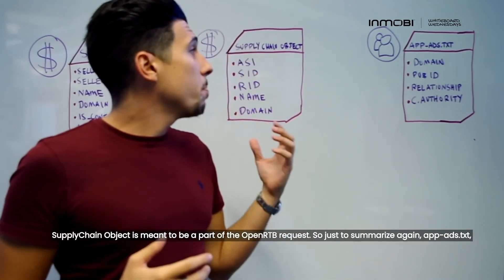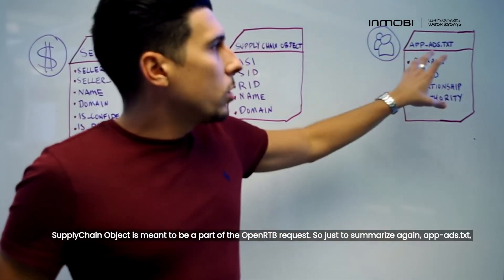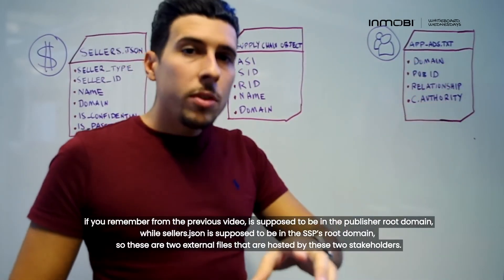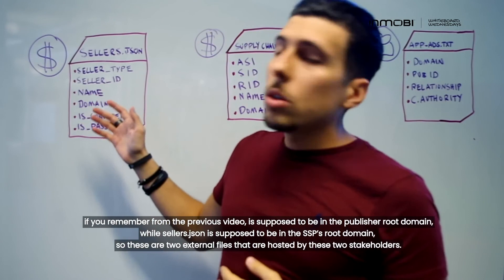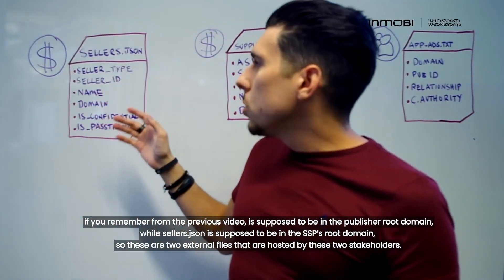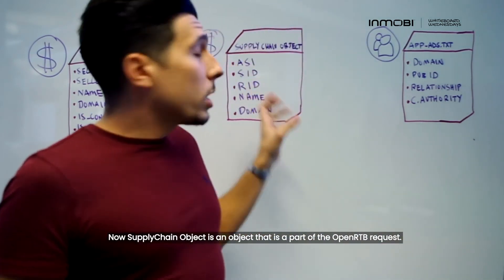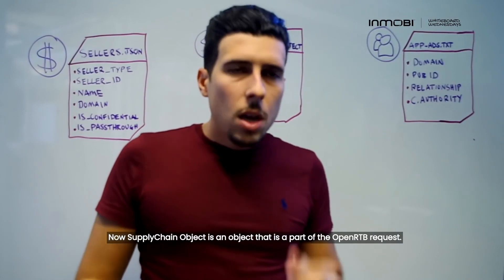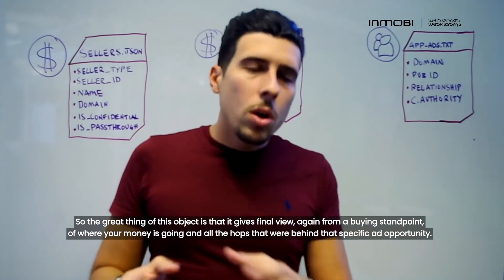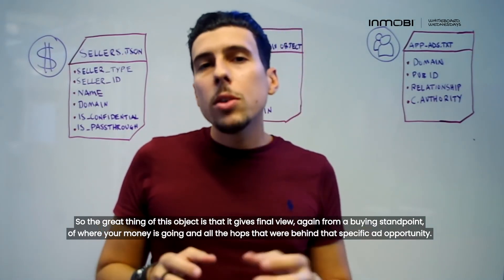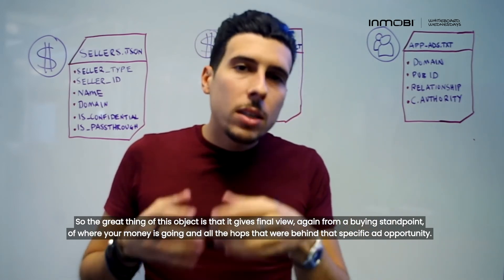Now let's look at the second important innovation: supply chain object. Supply chain object is meant to be part of the OpenRTB request. To summarize: app-ads.txt is supposed to be in the publisher root domain, while sellers.json is in the SSP domain — these are two external files hosted by those stakeholders. Supply chain object, by contrast, is an object that is part of the OpenRTB request itself. The great thing about this object is that it gives a final view from a buying standpoint of where your money is going and all the hops behind that specific ad opportunity.